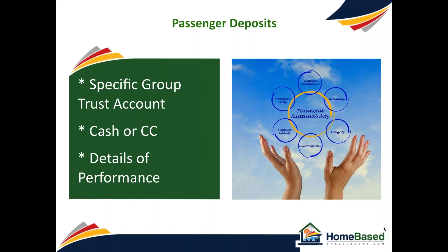The handling of the individual passenger deposits is critical. Each specific group departure should have its own trust account that the group leader may deposit funds into directly. This is where you would spell out the details of how the deposits will be made. Since there will be potential cash, check, or credit card, you should spell out the process in its entirety. A key consideration is whether you're going to allow deposits to be made on the group leader's credit card — this is normally a poor choice. What will happen to the deposits in case the group falls short should be spelled out here in great detail.